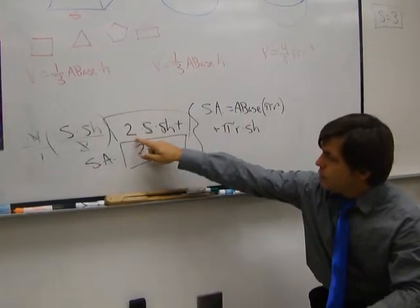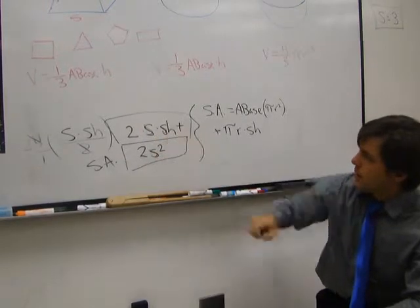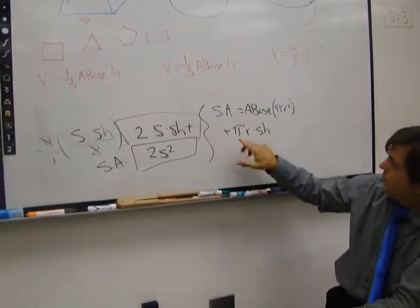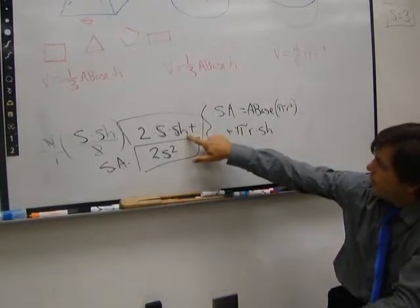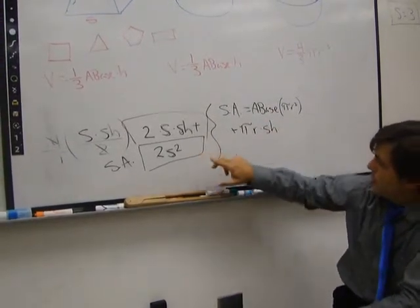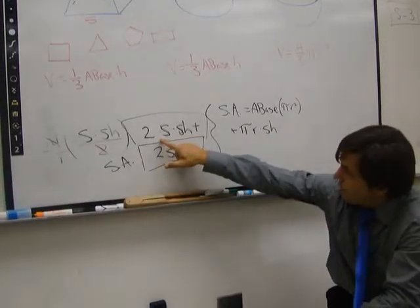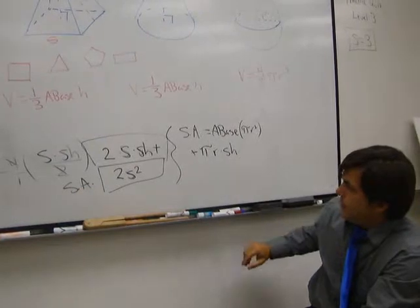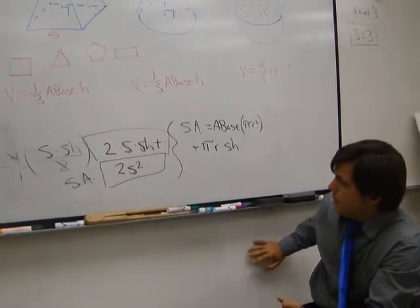So we have area of the base plus pi r slant height for the cone. Here, we have area of the base plus two side length times slant height. So basically, when you break it down, we have slant height here, slant height here. Area of the base here, area of the base here. You have pi radius here, and 2S here. So they're very similar if you analyze them. We'll get a lot of practice on that.